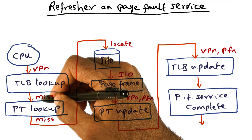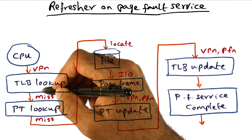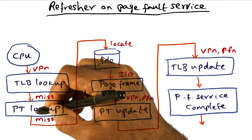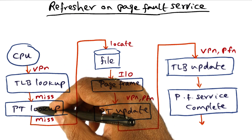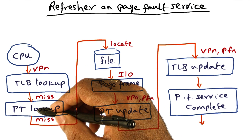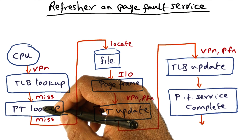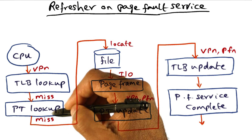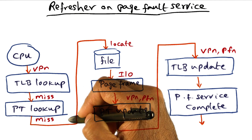If the TLB lookup fails — that's a miss in the TLB — the hardware will go to the page table and look up the mapping between the virtual page and the physical page. This mapping would exist if the operating system has already put the contents of that page in physical memory. But if the OS has not brought that page from disk into physical memory, the hardware may not find the mapping, resulting in a page table miss.